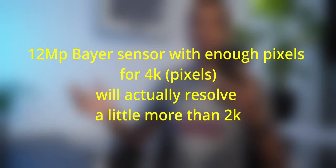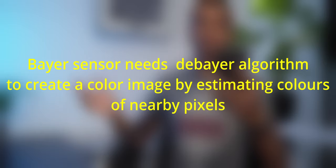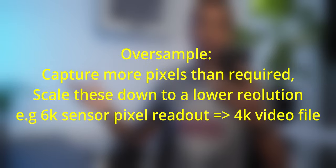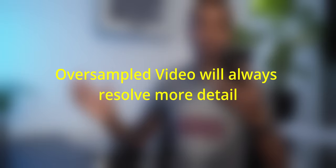For example, a 12 megapixel sensor recording 4K video might only resolve slightly more than 1080p because of the estimation involved. That's why a lot of modern high-end cameras oversample video. Cameras which oversample a 6K sensor readout down to 4K, or an 8K sensor readout down to 4K, will give far more video resolution compared to a 4K sensor readout to a 4K video file, as oversampling minimizes the approximation errors due to the de-Bayer algorithm.